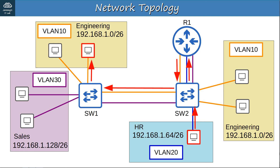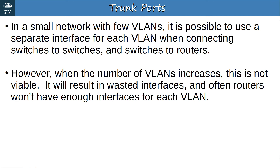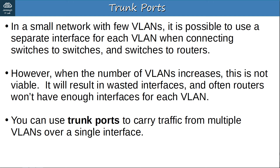In a small network with few VLANs, it is possible to use a separate interface for each VLAN when connecting switches to switches and switches to routers. However, when the number of VLANs increases, this is not viable — it results in wasted interfaces, and routers often won't have enough interfaces for each VLAN. You can use trunk ports to carry traffic from multiple VLANs over a single interface. Trunk ports are different from access ports, which belong to a single VLAN only.